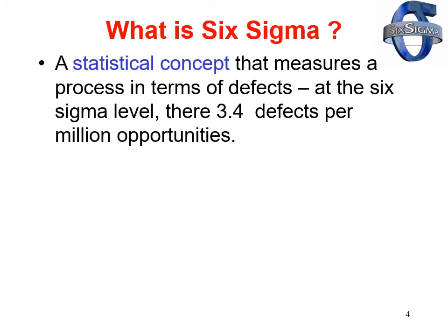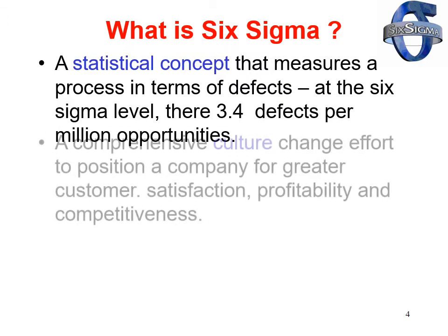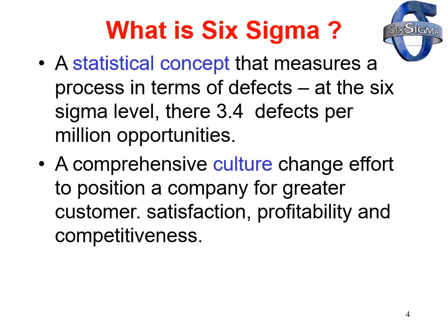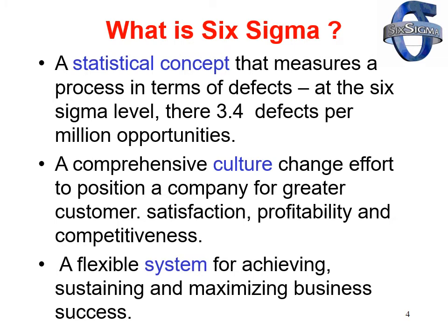Six Sigma is also a statistical concept that measures a process in terms of defects. At the Six Sigma level, there are 3.4 defects per million opportunities. It is a comprehensive culture change effort to position a company for greater customer satisfaction, profitability, and competitiveness. It is also a flexible system for achieving, sustaining, and maximizing business success.